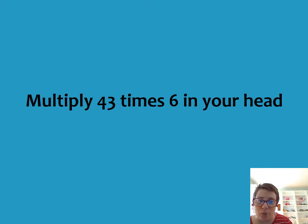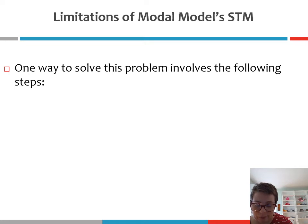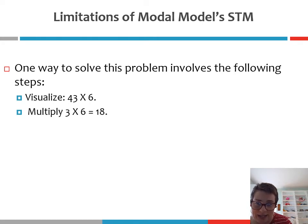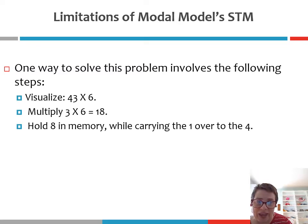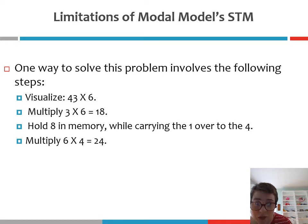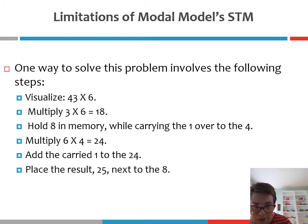Similarly, if I were to ask you to multiply 43 times 6 in your head, chances are you would go through the following sequence: visualize 43 times 6 in your mind, multiply 3 times 6 to get 18, hold the 8 in your memory while carrying the 1 over to the 4, multiply 6 times 4 to get 24, then add the carried 1 to the 24 and place the 25 next to the 8 to get the answer of 258.